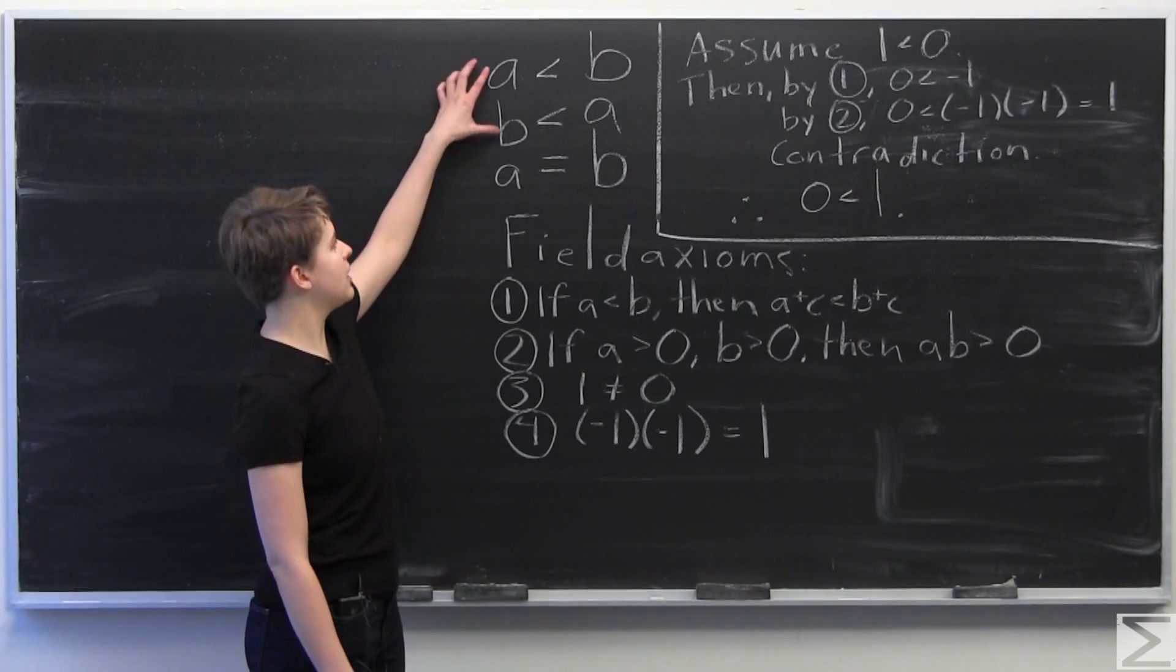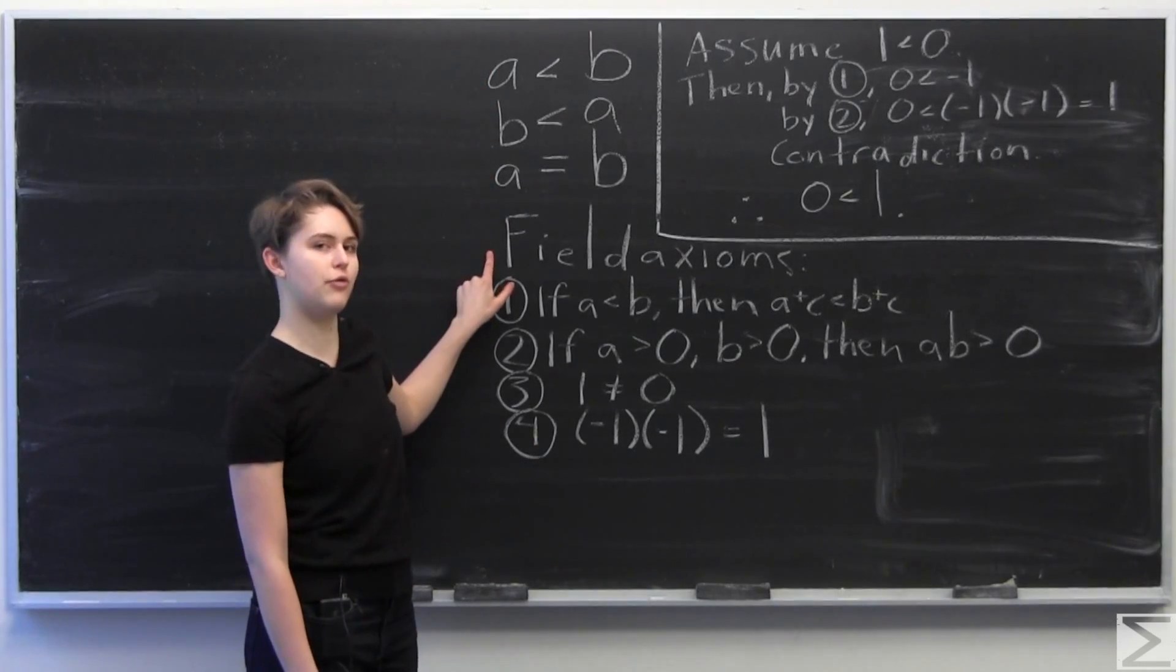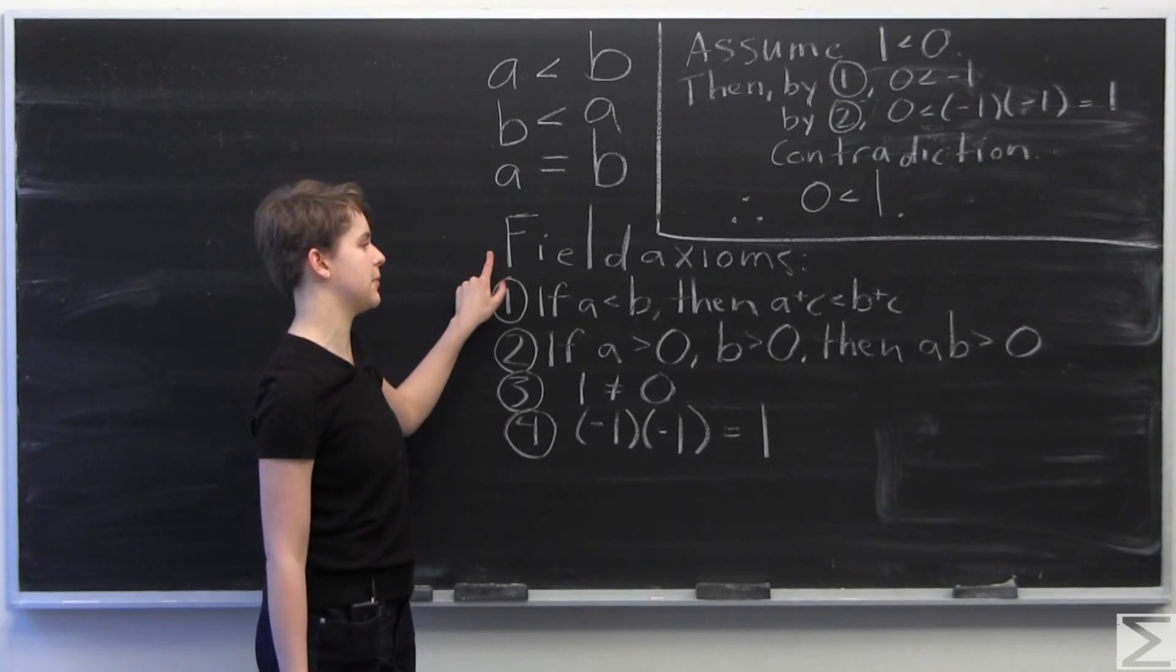So we can assume the following properties of an ordered field, and we're going to take the following four field axioms without proof, just for the purpose of this video.